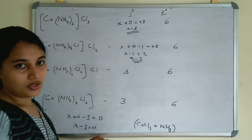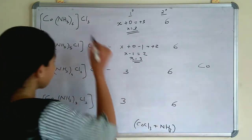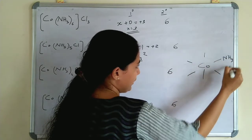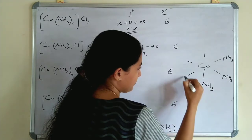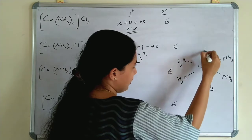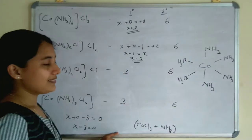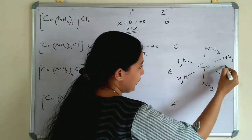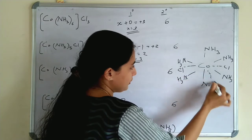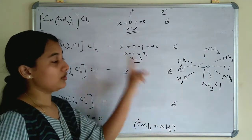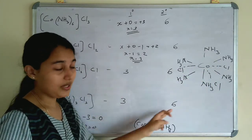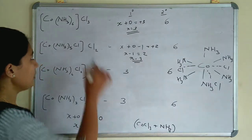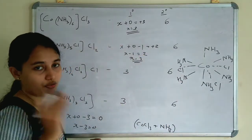Let's write the structure of the first compound. It is cobalt with 6 ammonia molecules — NH₃, NH₃, NH₃, NH₃, NH₃, NH₃. So 6 ammonia is present in the first compound. And 3 chlorines are ionisable, represented by dotted lines (1, 2, 3). Because these 3 chlorines are ionisable, they are represented by dotted lines. The thick line is for secondary valency. Here the 6 ammonia molecules form the secondary valency.